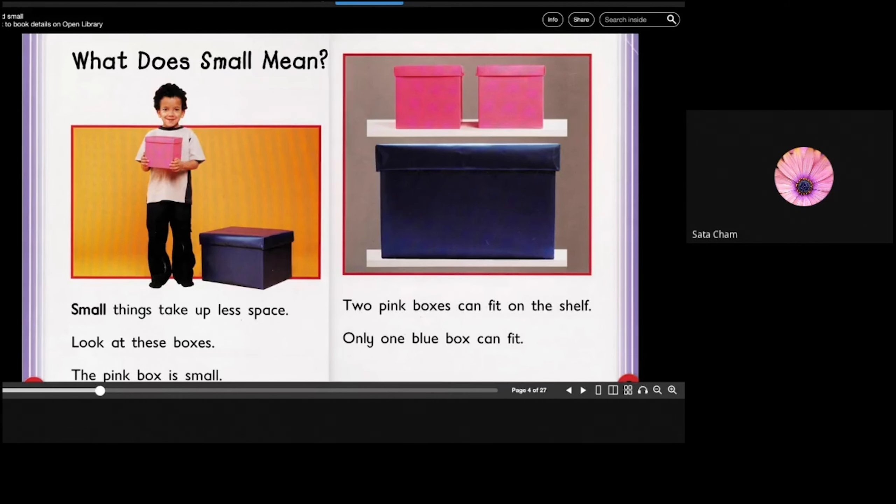What does small mean? Small things take up less space. Look at these boxes. The pink box is small. Two pink boxes can fit on the shelf. Only one blue box can fit. So because the blue box is bigger, only one can fit. But because the pink boxes are smaller, two can fit.